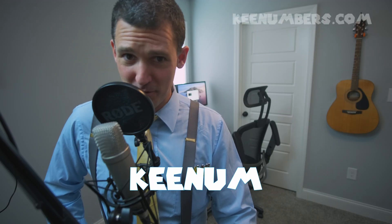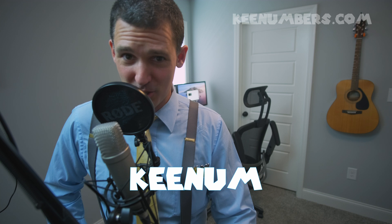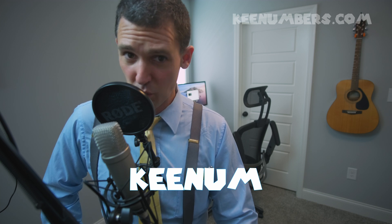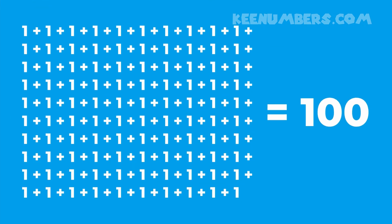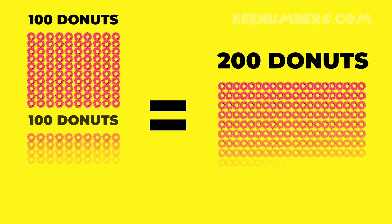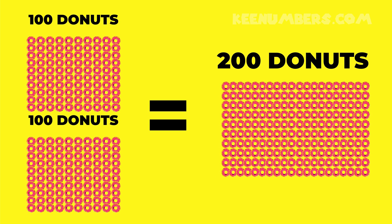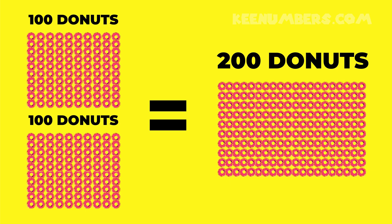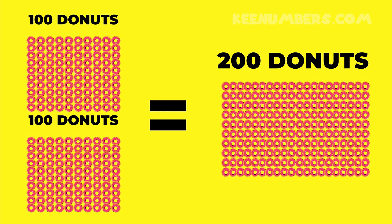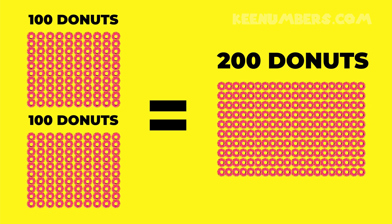Alright, we're going to do a tough one. We're going to talk about three-digit addition with grouping. Now, we've already talked about this before, but 100 — that's 100 ones. It may seem pretty simple to you, but it gets complicated when you start talking about 100 donuts and 100 donuts. But that's just 200 donuts because one and one make two.